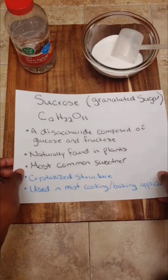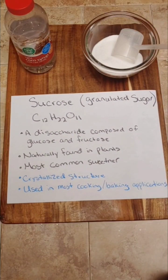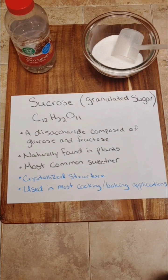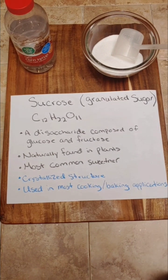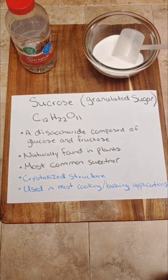Sucrose, which we typically call table sugar or granulated sugar, is one of the most commonly used sweeteners in baking and cooking in general. And it is normally a crystallized form, and because of this, it doesn't retain moisture as much as a syrup would. And it also dissolves in water.